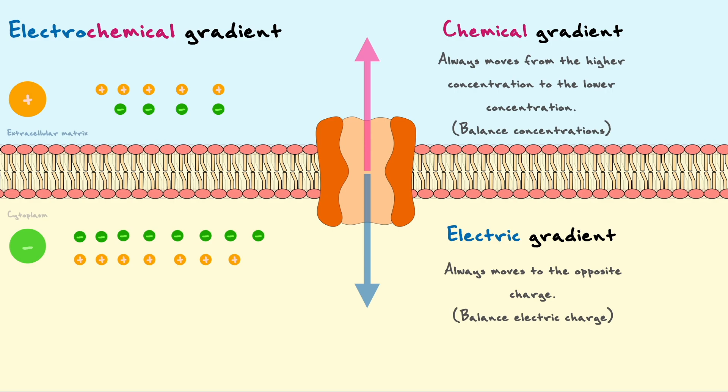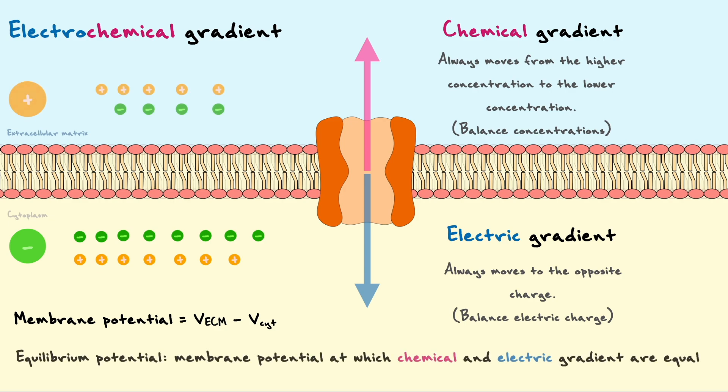As a result of the difference in charges between the inside and the outside of the cell, we can establish the membrane potential, which corresponds to the voltage across the membrane, or in other words the difference in voltage between the extracellular matrix and the cytoplasm. In our example here with potassium, we can also establish its equilibrium potential, which is the membrane potential at which the drives from the chemical and the electrical gradients are equal for the ion.